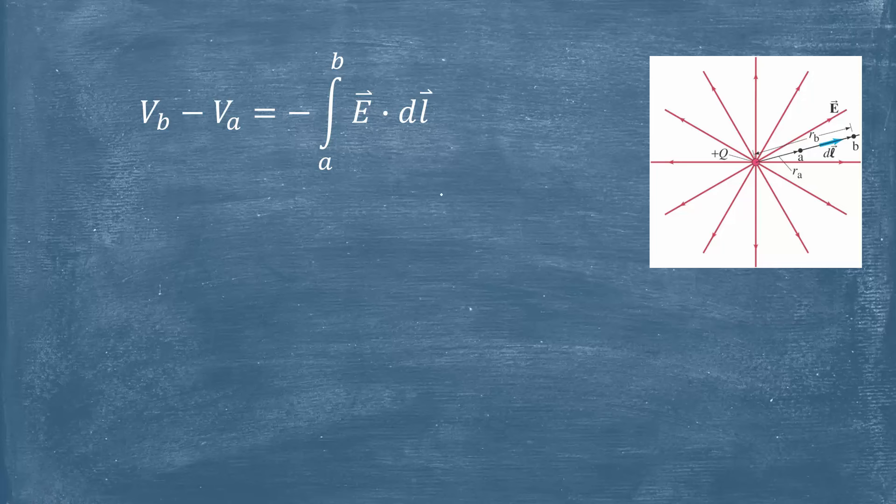All right, let's get to it. So here's our general expression relating the electric field and the difference in potential, and we're going to use this to find the potential due to a point charge, very similar in fact identically to how we did with a charged sphere.